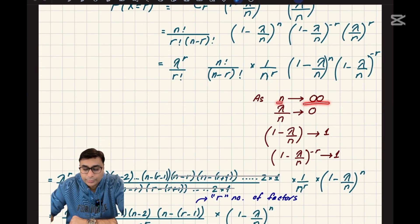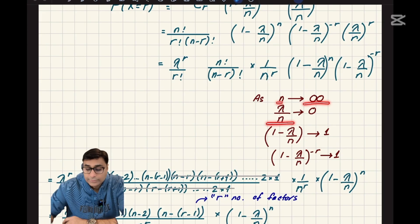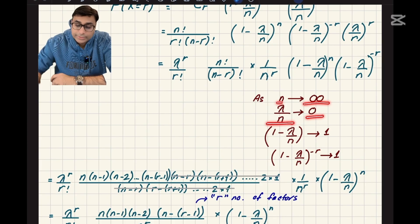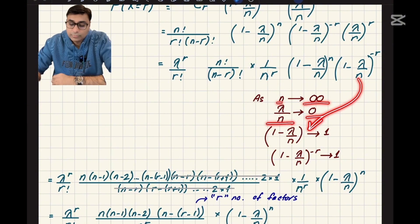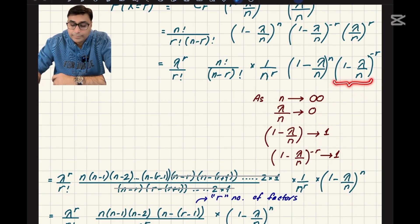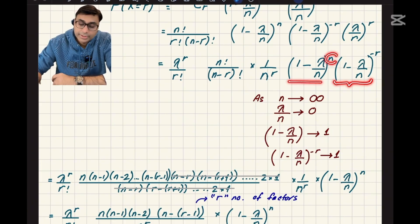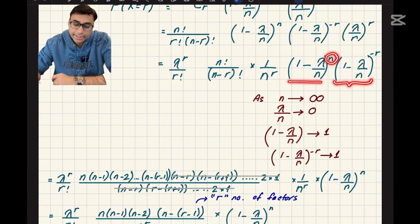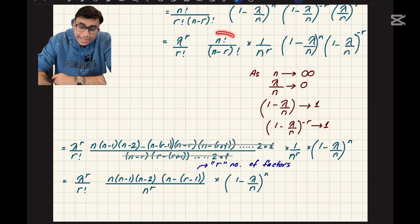Because n is very large and approaching infinity, lambda/n approaches zero. Therefore (1 - lambda/n) to the power minus r approaches 1 to the power minus r, which is just 1. So we can approximate that entire factor as 1. We cannot do the same for (1 - lambda/n) to the power n, since its exponent is also approaching infinity, so we leave that term for now.